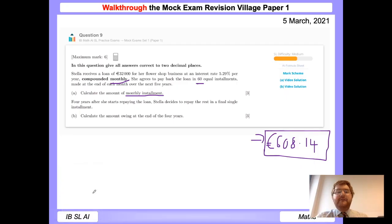Okay, so we write that answer down. And make sure we've rounded to the nearest cent. Okay, so the final part of the question is a little bit on the trickier side. So four years after she starts repaying the loan, Stella decides to repay the rest in a final single installment. And we need to calculate the amount owing at the end of that four years. So we need to think about within that four years exactly what will be left owing afterwards. So let's fill in the information that we know so far.